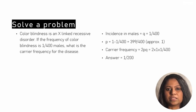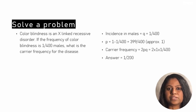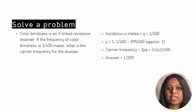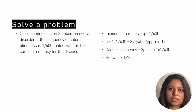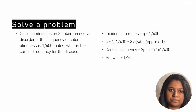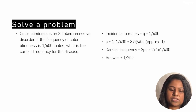Let's apply the Hardy-Weinberg equation to an X-linked recessive disorder. Colorblindness is X-linked recessive with a frequency of 1 in 400 in males. Since incidence in males equals q, we have q = 1 in 400. The carrier frequency is 2pq = 2 × 1 × (1/400) = 1 in 200. So the carrier frequency of colorblindness is 1 in 200.